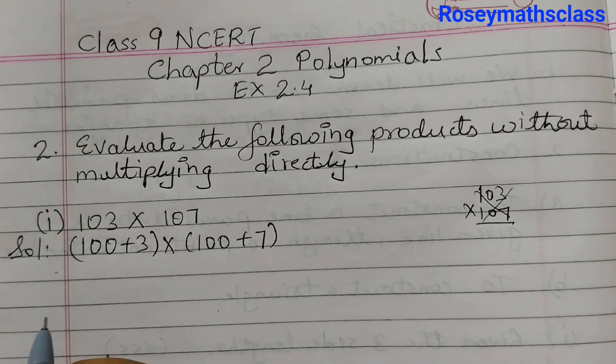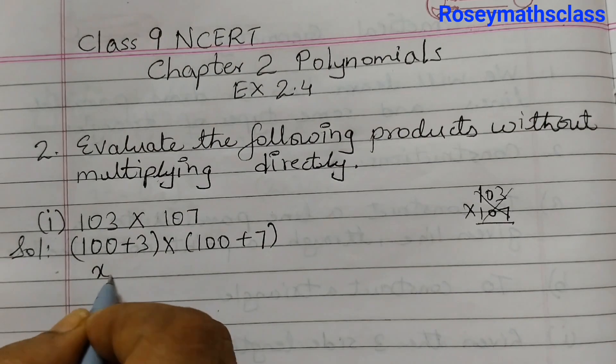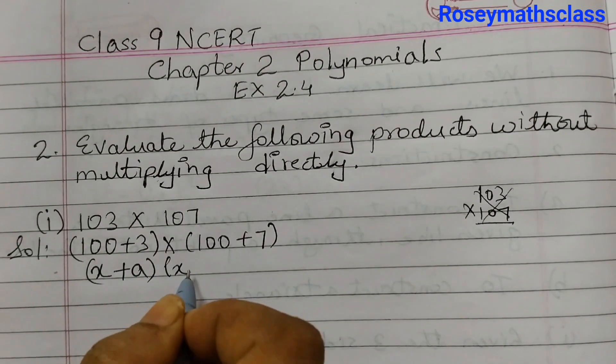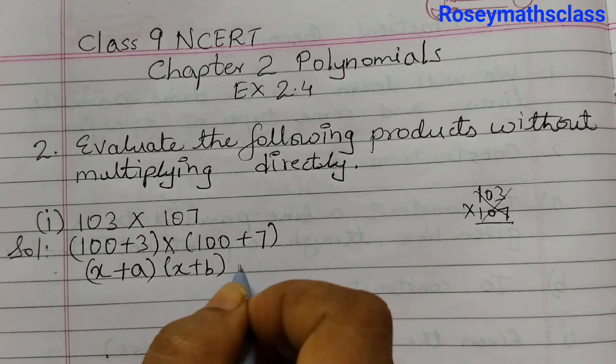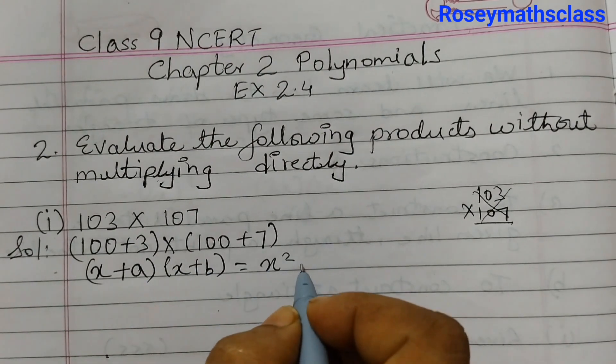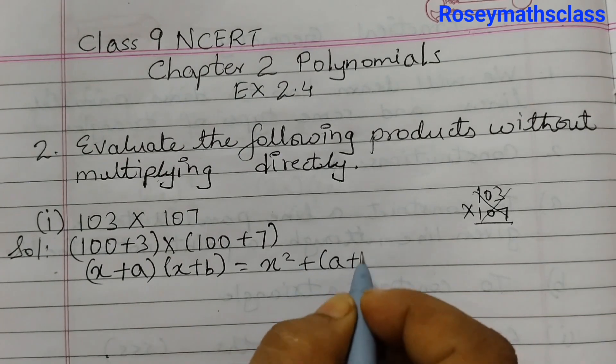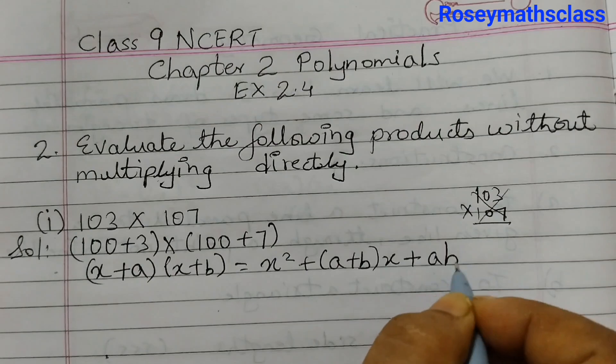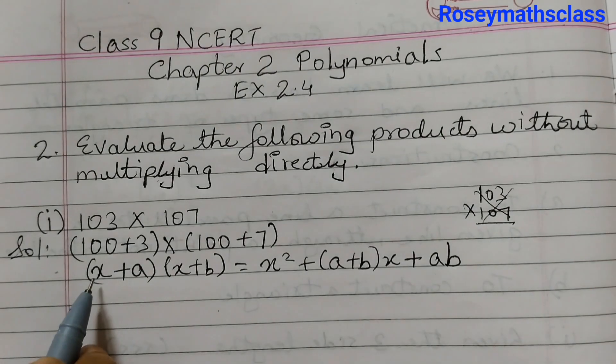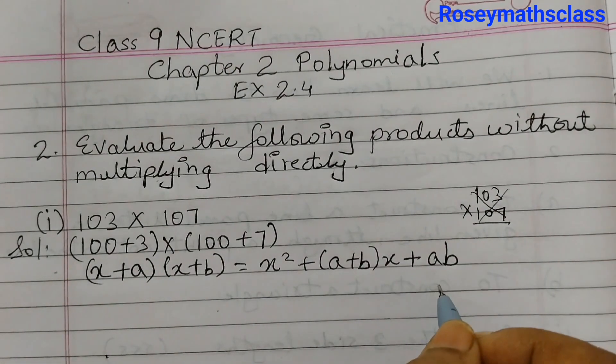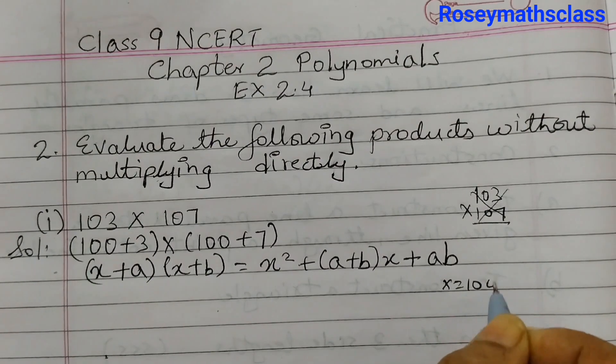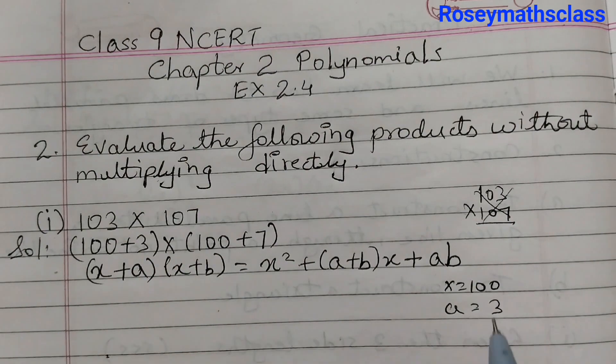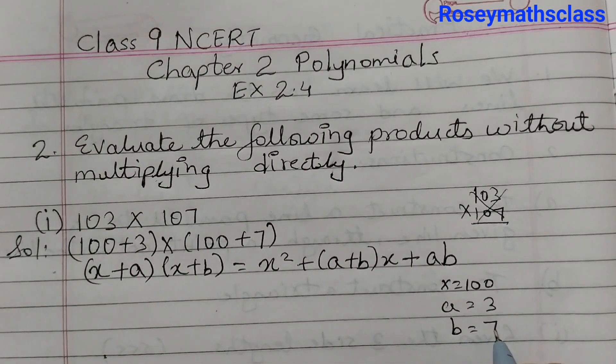The identity that we are going to use is (x+a)(x+b) = x² + (a+b)x + ab. Here x is 100, a is 3, b is 7.